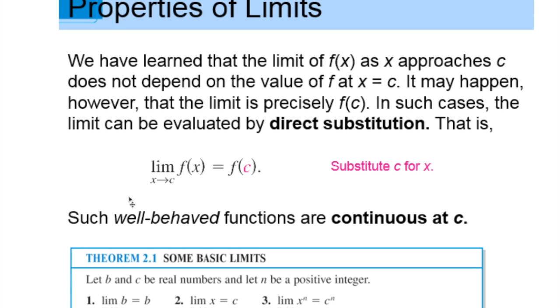Theorem 2.1, some basic limits. So it basically says the limit of b as x approaches c is equal to b, and the limit of x as x approaches c is equal to c, and the limit of x raised to the n power as x approaches c is equal to c to the n power.